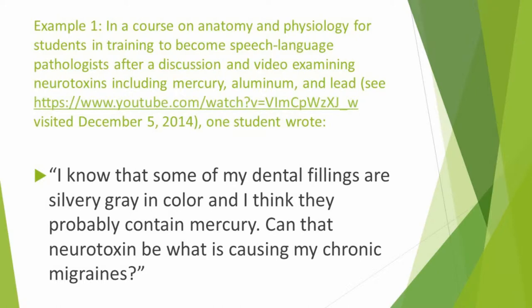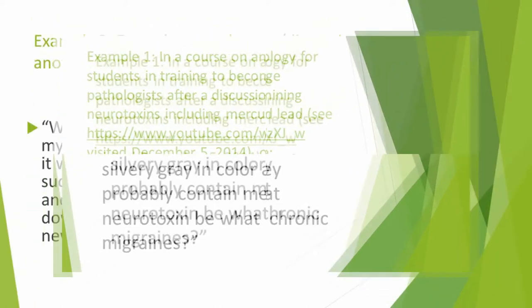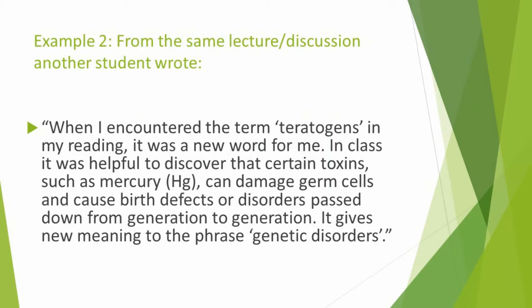Here's another example from the same lecture discussion. Another student wrote: when I encountered the term 'teratogens' in my reading, it was a new word for me. In class, it was helpful to discover that certain toxins such as mercury (Hg) can damage germ cells and cause birth defects or disorders passed down from generation to generation. It gives new meaning to the phrase 'genetic disorders.'